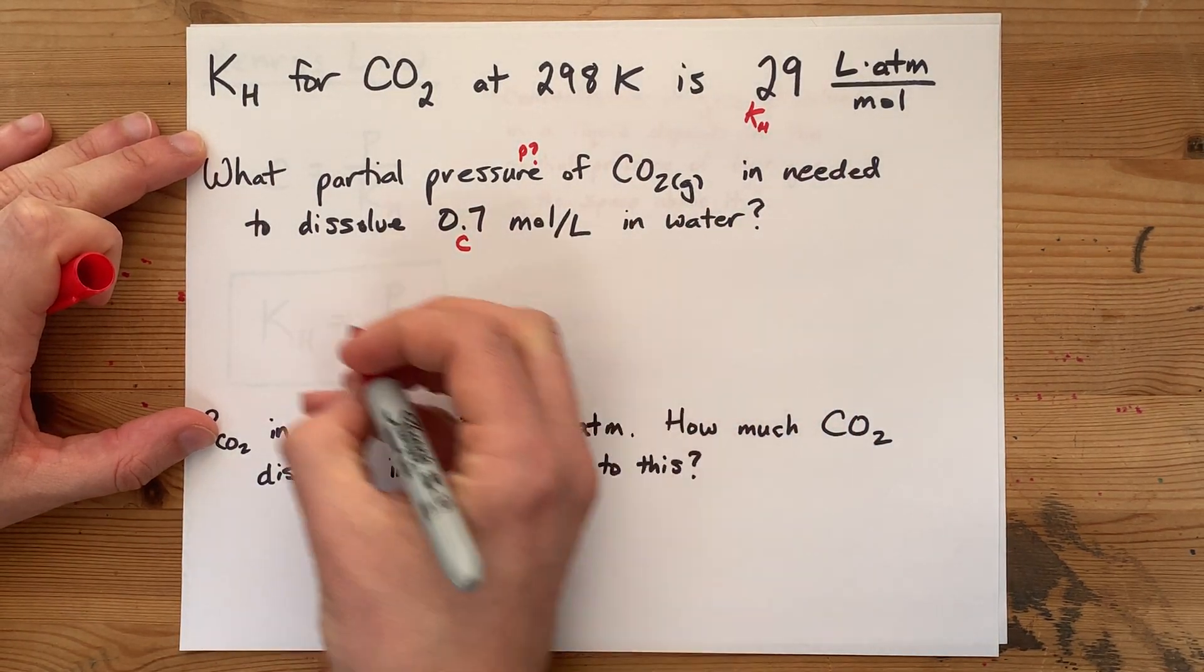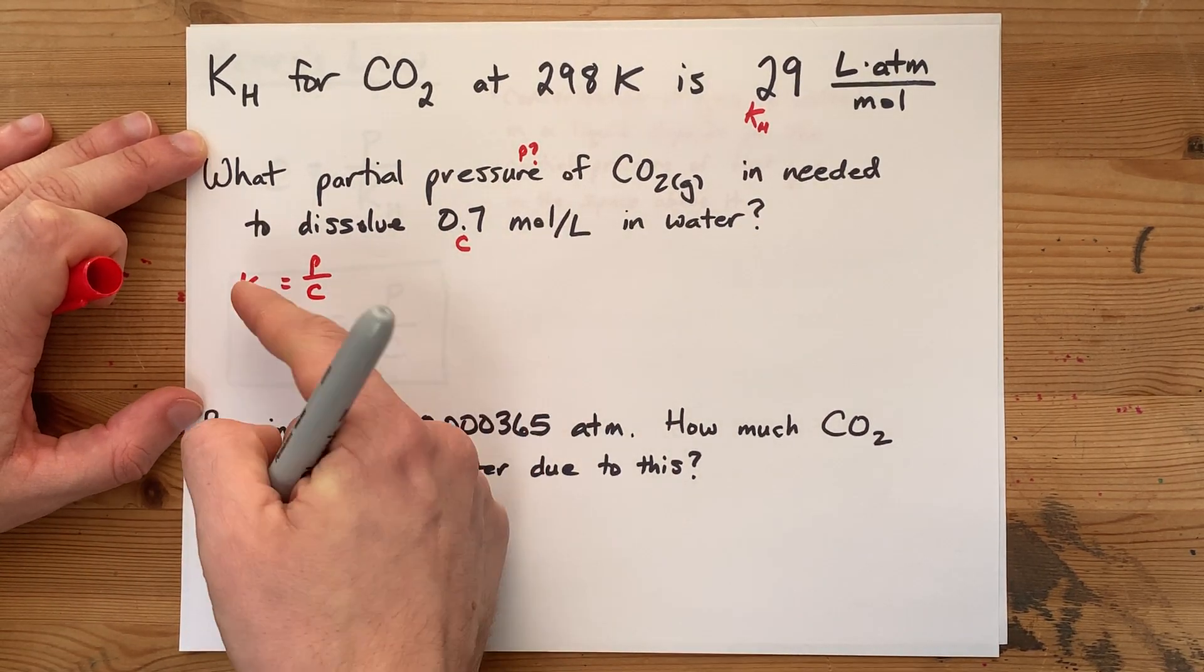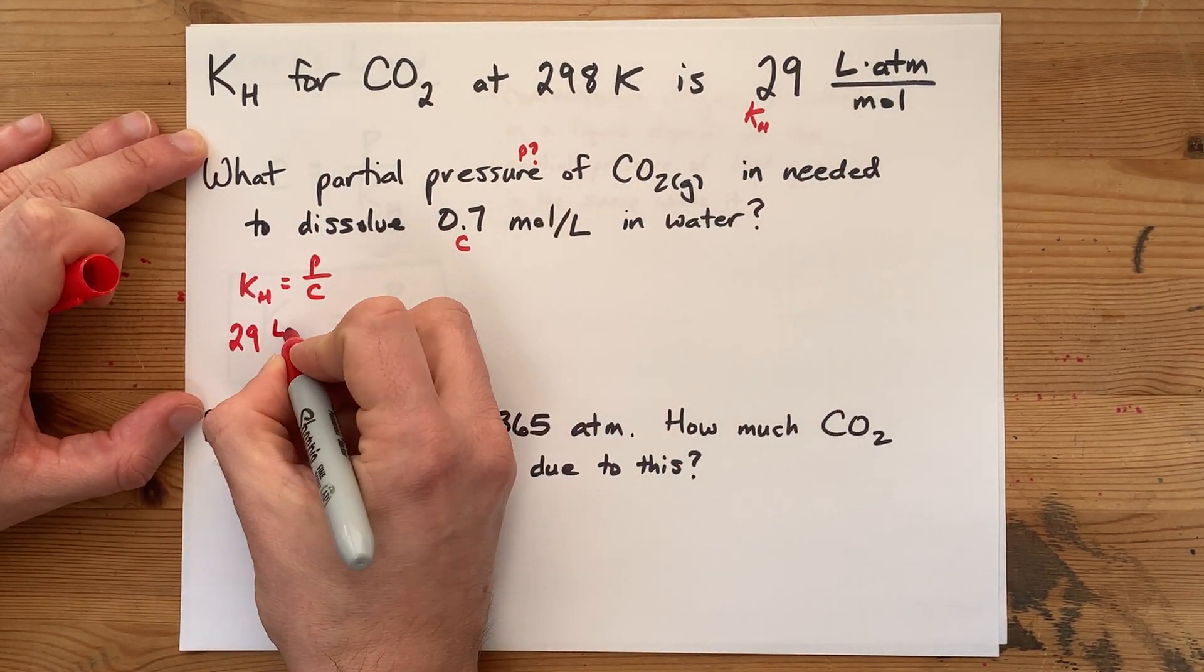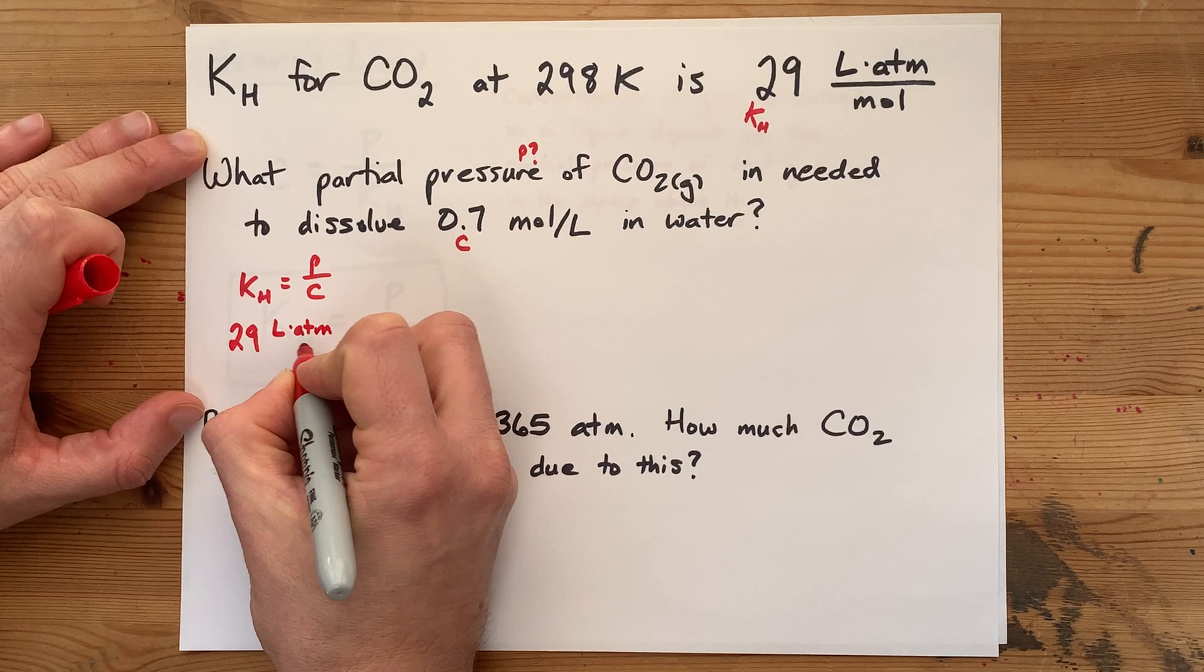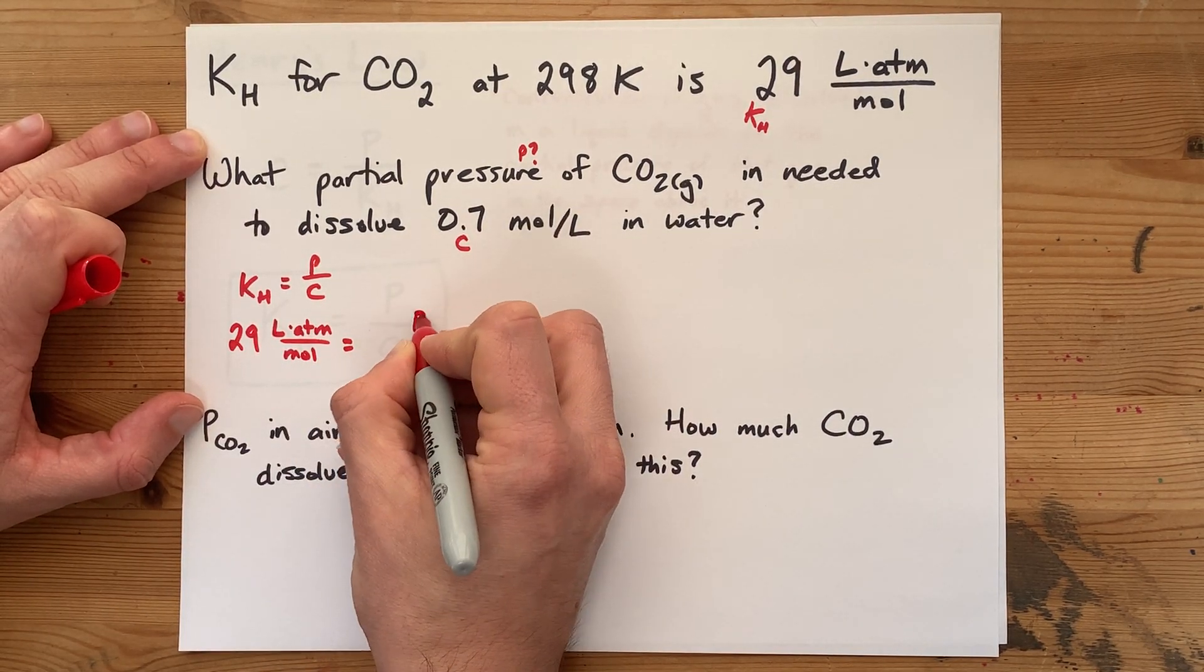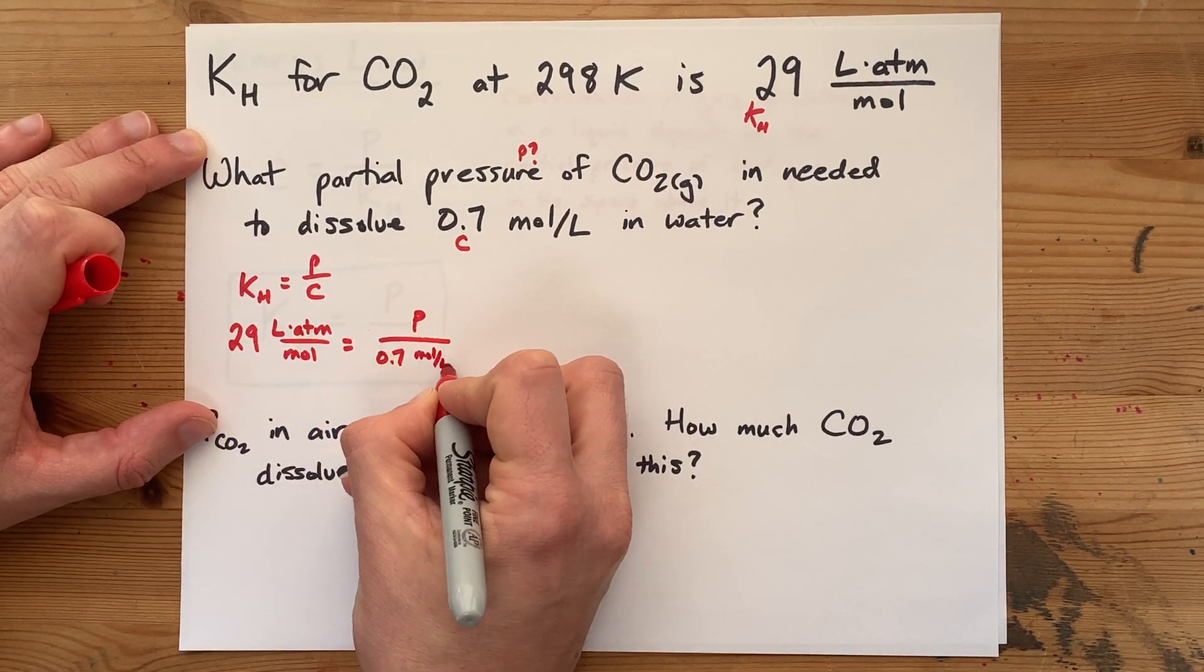Let's find out. The equation is KH equals P over C. The KH is 29, and I'm going to put the units here just to emphasize what's happening. The pressure is what we do not know, and the concentration is 0.7 moles per liter.